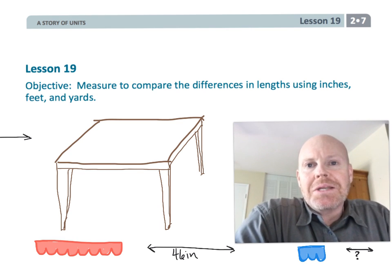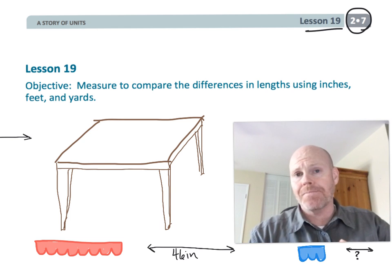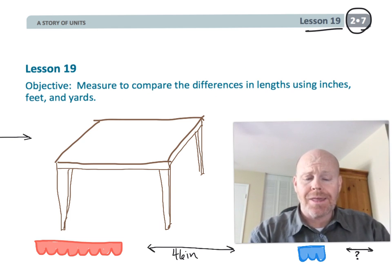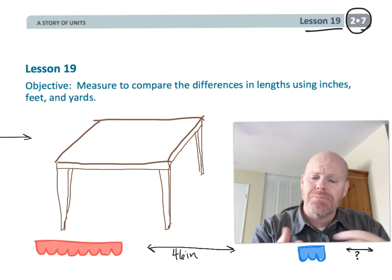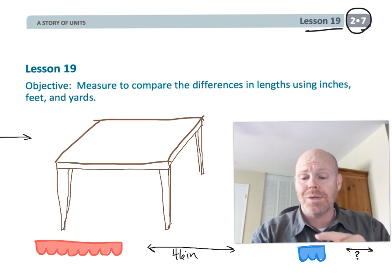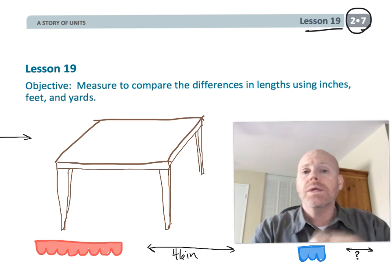This is second grade module 7 lesson 19. In this lesson students are going to be measuring and then comparing those differences. They're going to learn that when you've got measurements of the same units you can add them, you can subtract them, just like regular numbers.